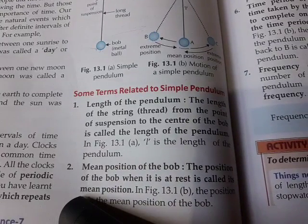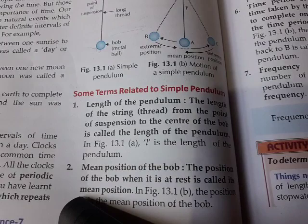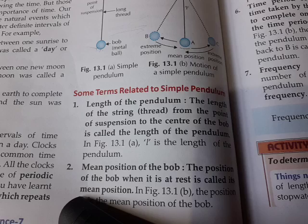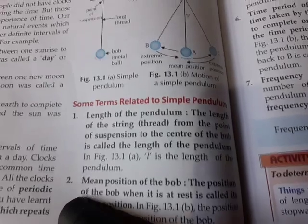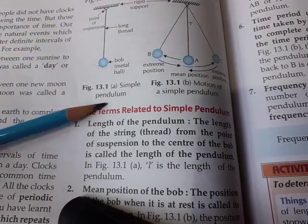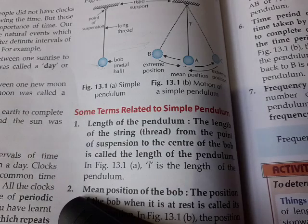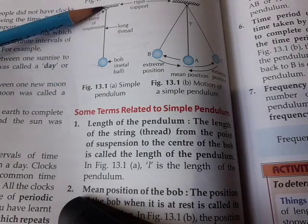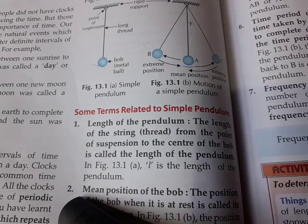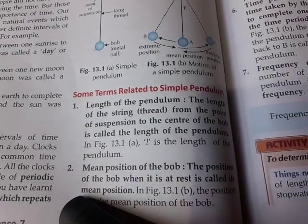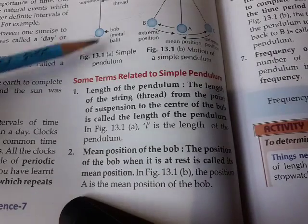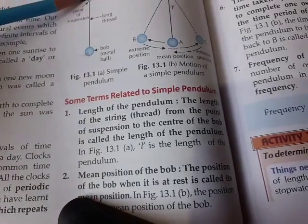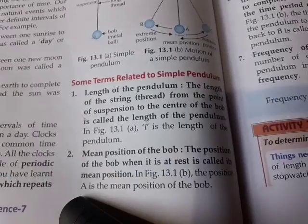Now, some pendulum-related terms — the bob is tied by a thread, and the length of the pendulum depends on that thread. The longer the pendulum, the longer the thread. The length of the pendulum is the distance from the bob to the rigid support, denoted by small 'l'. Overall, the length is measured from the center point of the bob to the rigid support.